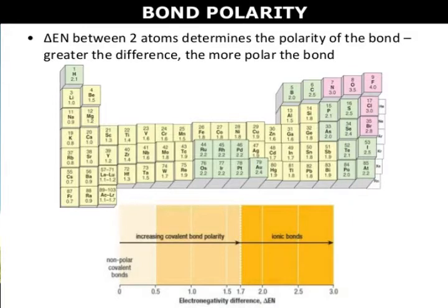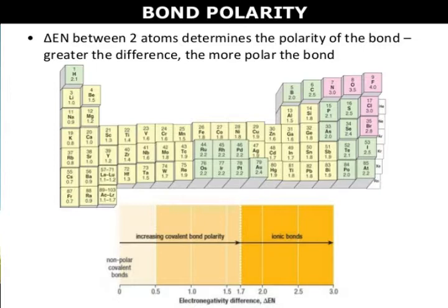Using the periodic table to determine electronegativities: electronegativity generally increases from left to right across a period, due to an increase in nuclear charge. Alkali metals have the lowest electronegativities while halogens have the highest. Most noble gases do not form compounds and therefore do not have electronegativities. Note that there is little variation among the transition metals. Electronegativity generally decreases from top to bottom within a group, due to larger atomic size.